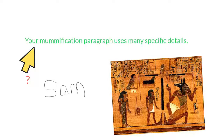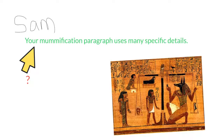I can put the direct address at the front of my sentence. Of course, I would need to separate it from the rest of the sentence with a comma, because it is not part of my independent clause — 'your mummification paragraph uses many specific details.' So I set it apart and separate it with a comma: 'Sam, your mummification paragraph uses many specific details.'